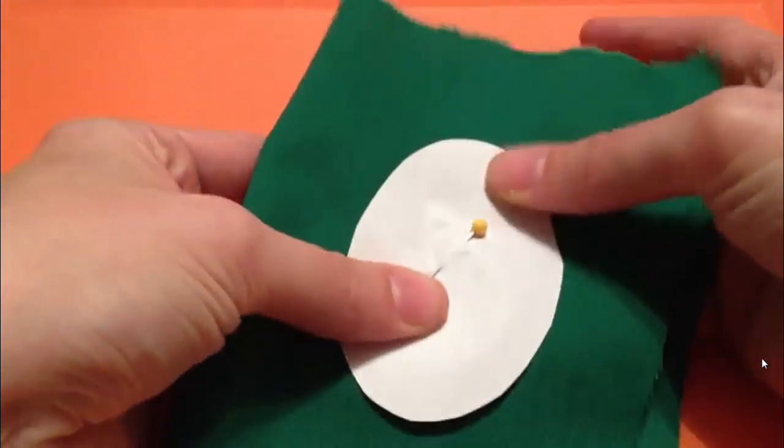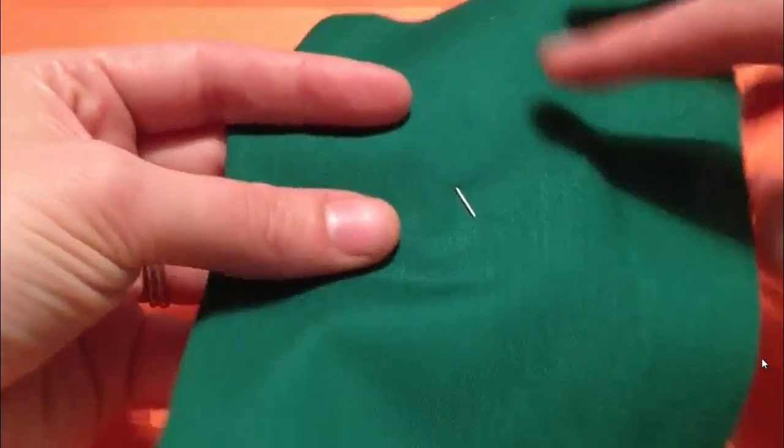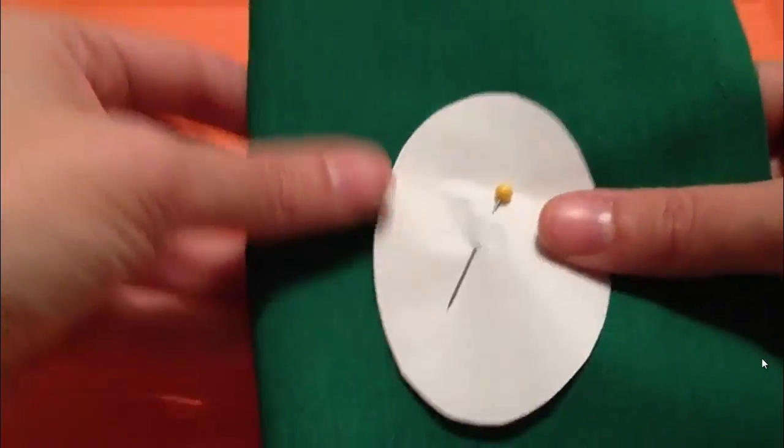And you're going to gently pull to flatten it out so it's not wrinkled in the middle there. Flip it over, take a look and see how I've gone through both layers of fabric and the paper with the same pin.